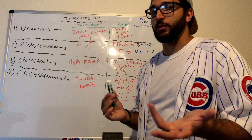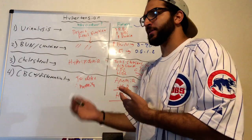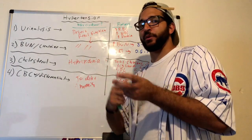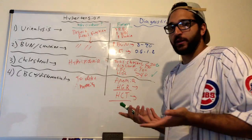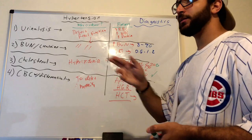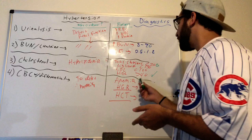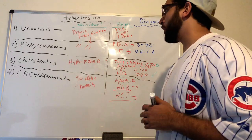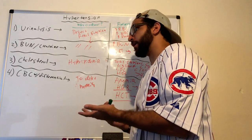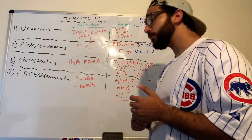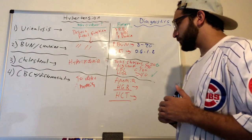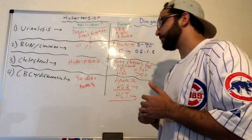A cholesterol test is ordered to detect hyperlipidemia. Poor diet leads to high lipid content sticking to artery walls, causing atherosclerosis and narrowing. Normal values: total cholesterol less than 200, triglycerides less than 150, LDL less than 100, HDL greater than 40. A CBC with differential is ordered mainly to detect anemia, as red blood cells contain heme, globin, and iron — hemoglobin is what carries oxygen and maintains tissue perfusion.